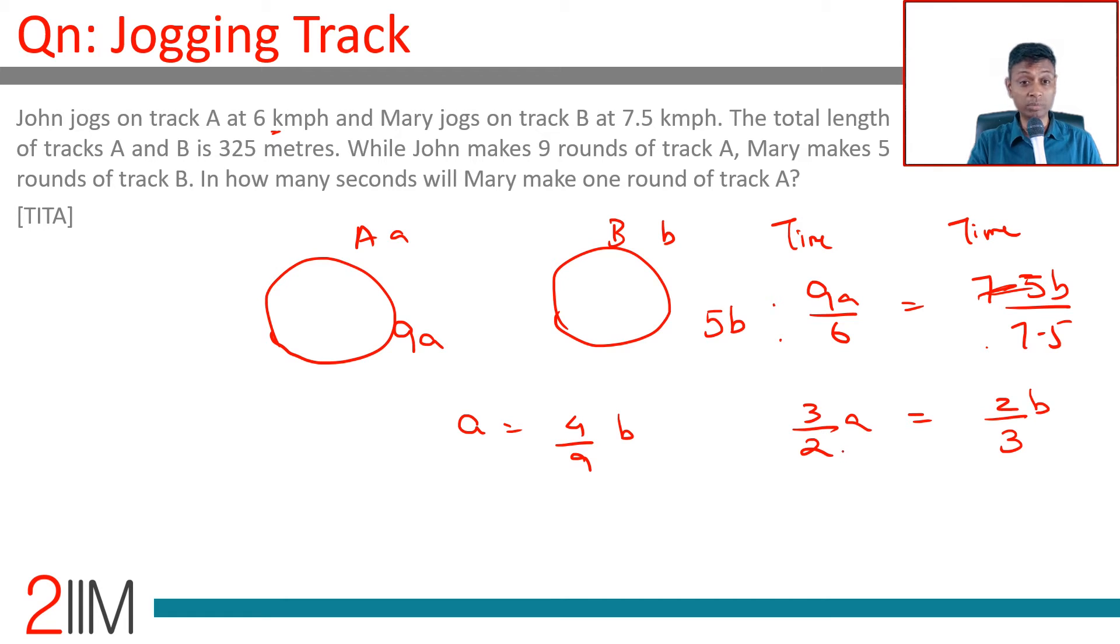A is 4/9 of B. The total length is 325 meters. A is 4 by 9 of B, so 4 by 9B plus B is 325, or 13 by 9B is 325 meters. B is 325 into 9 by 13, which is 25 into 9, which is 225 meters.